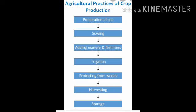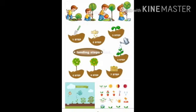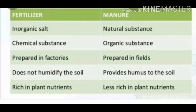After that, the steps which are involved in agricultural practices are: first, preparation of soil; sowing; adding manure and fertilizers; irrigation; protecting from weeds; harvesting; and the last step is storage. You can see in this diagram how the plowing and tilling of soil is done first, then putting seeds, then irrigation and so on.